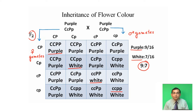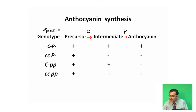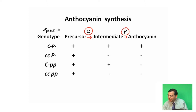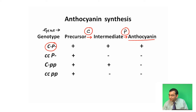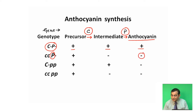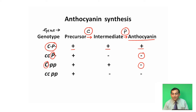The explanation provided by Bateson and Cunet for this epistatic pattern of inheritance is that when two dominant genes C and P are present, they are responsible for the synthesis of anthocyanin pigment, resulting in purple color. When only one dominant gene is present, no purple pigment is synthesized. Similarly, when only C is present, no anthocyanin pigment is synthesized. Even in double recessive condition ccpp, no anthocyanin pigment is synthesized.